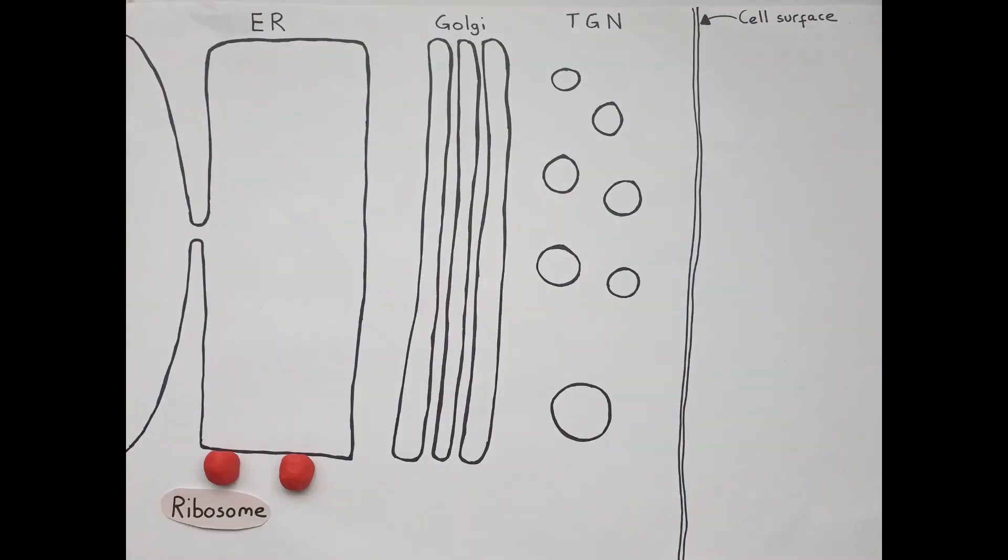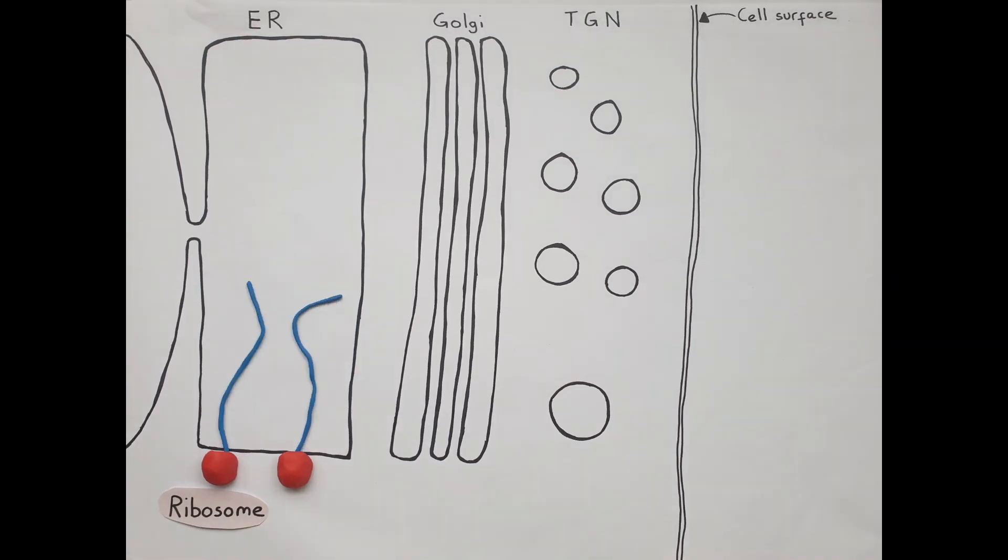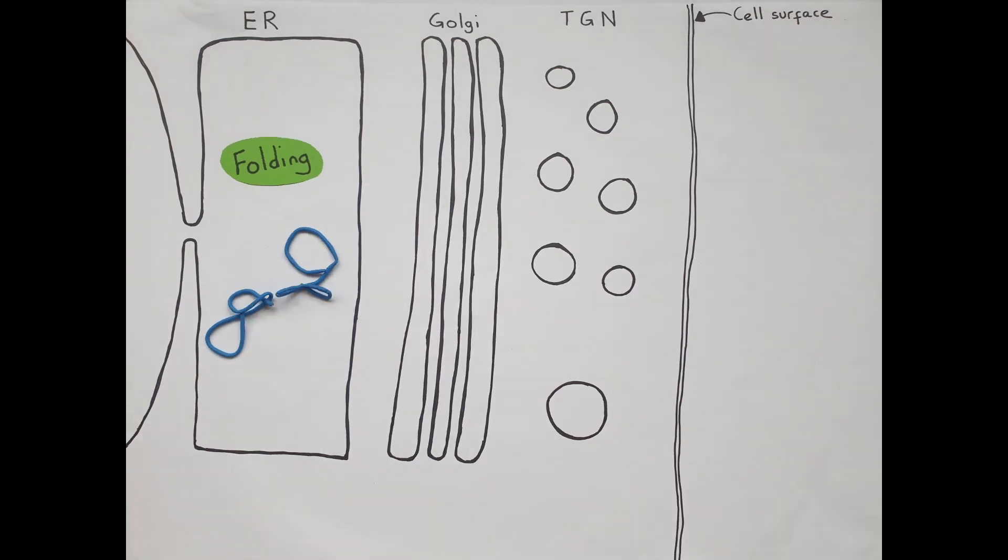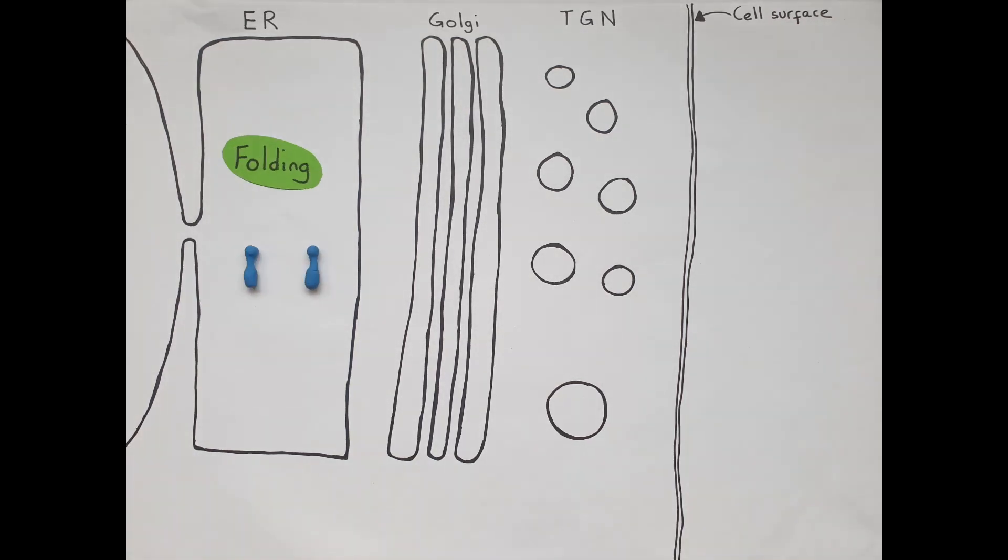Insulin receptors are made by ribosomes that are attached to the membrane of the endoplasmic reticulum or ER. Newly made insulin receptors fold and dimerize in the ER.